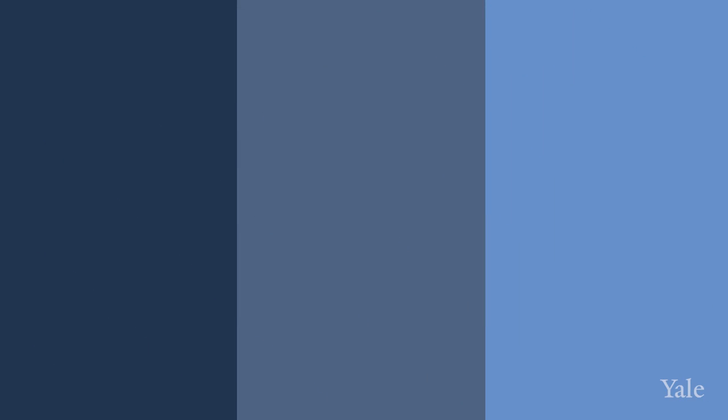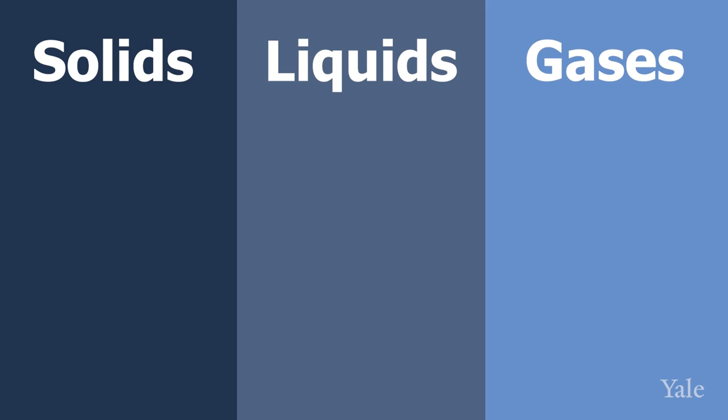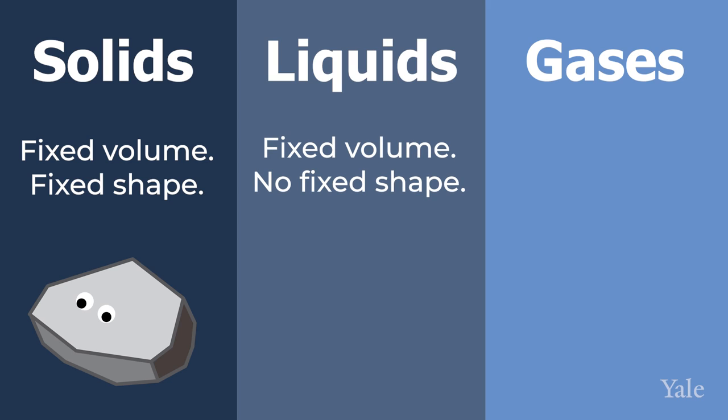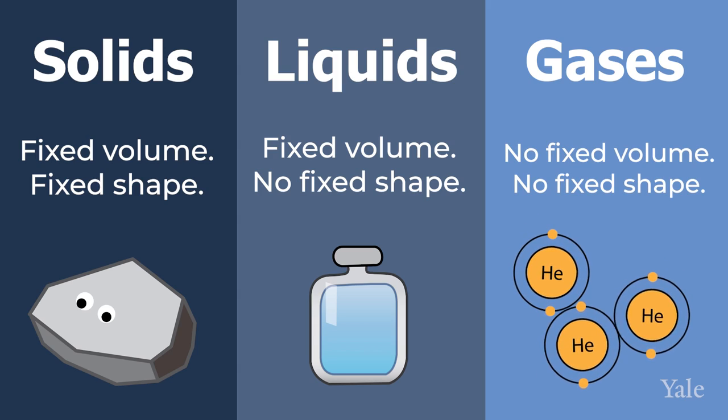So let's summarise. There are three states of matter: solids, liquids, and gases. A solid has a fixed volume and shape. A liquid has a fixed volume but no fixed shape. A gas has no fixed volume or shape. And too little energy will bring a school dance to a standstill, like a solid, while too much energy will have them bouncing around like particles in a gas.